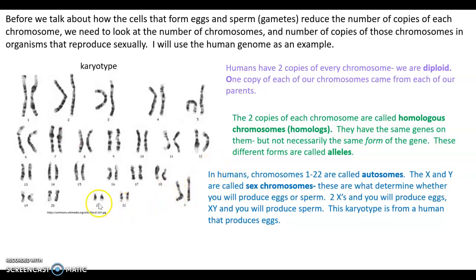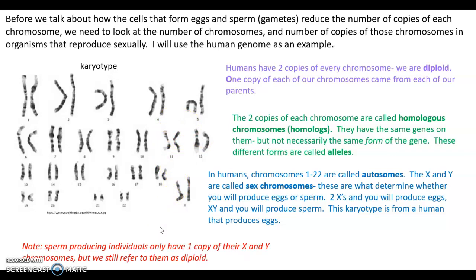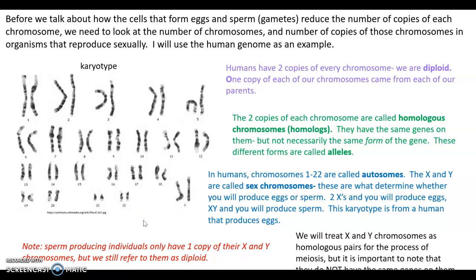In humans, chromosomes one through 22 are called autosomes. The other two chromosomes are the sex chromosomes — the X and Y chromosomes. In this karyotype there is no Y chromosome shown. The X and Y chromosomes determine whether you produce eggs or sperm: two X chromosomes means you produce eggs, and an X and a Y means you produce sperm. Importantly, sperm-producing individuals have only one copy each of their X and Y chromosomes, but we still refer to them as diploid. We treat the X and Y as homologous pairs for meiosis, though they do not have the same genes.